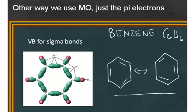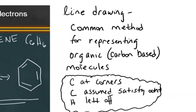Now before we go too much further, let me remind you that this is a shorthand way, what I've shown here, a shorthand way called a line drawing to represent this organic molecule. It's a very common method. You've probably seen it used before in your biology class. But it's a very common method for representing organic, that is, carbon-based molecules. We assume carbons are at the corners every time you have a corner.